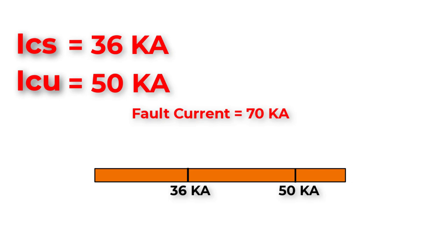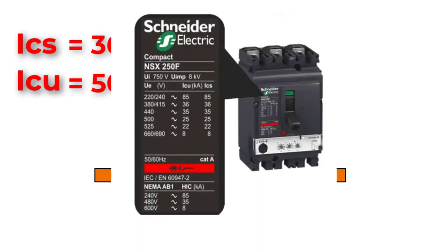Now if the fault is equal to 70 kilo-amperes, which is above ICU, the breaker will not be able to handle this fault current. That will cause rupture to the breaker and the complete circuit, and could also cause a fire. So be extra careful.